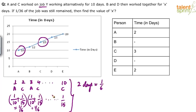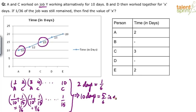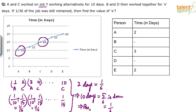10 days is like 5 times 2 days, so in 10 days they'll finish 5/6 of the work. That means 5/6 is completed, so the remaining work is 1/6. You don't have to write all these steps in the exam — these are mental calculations. The remaining work is 1/6.